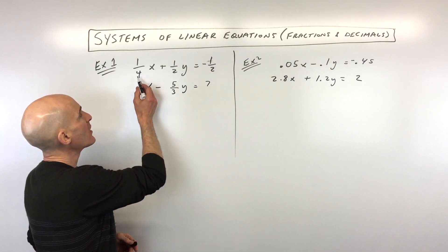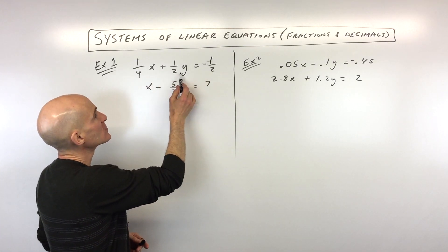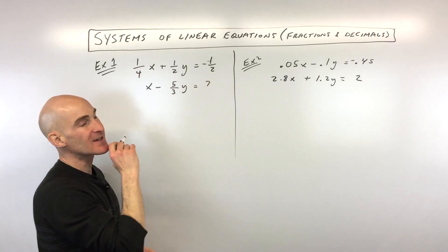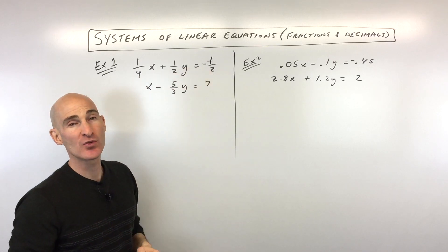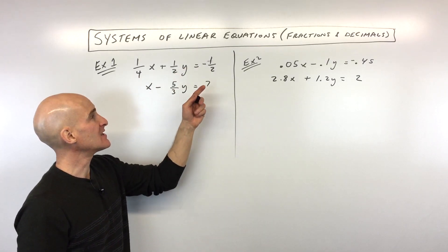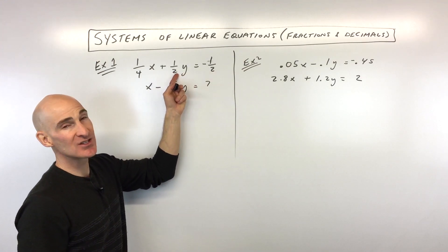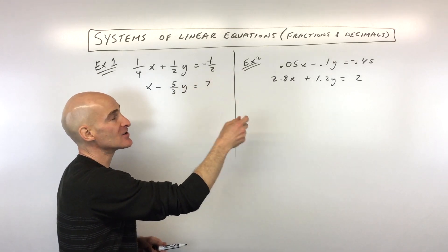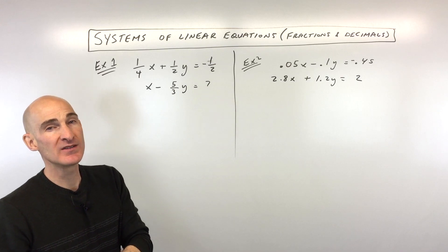What you want to do is look at all the denominators. So when you look at the denominators, we've got 4, 2, and 2. When we're looking at this first equation, what's the lowest common denominator? A lot of students will mistakenly say 2, thinking 2 goes into 4 and 2 goes into 2. But what we're looking for is the smallest number that 2 would divide into and 4 would also divide into — and that would be 4.